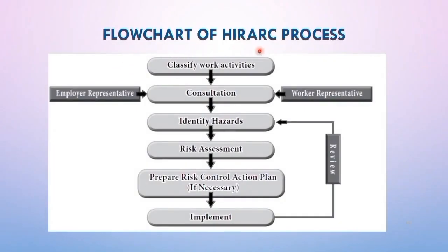This is the flow chart of the HIREC process. The first step is to classify the work activities. After classifying work activities, consult the employer representative and also the worker representative. After that, identify the hazards, conduct the risk assessment, prepare the risk control action plan, then implement, and lastly review the hazards.